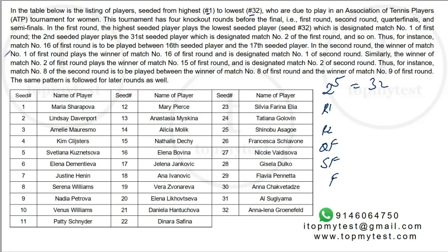The highest seeded player plays the lowest seeded player — seed number one is match number one of the first round. The second seeded player plays the 31st seeded player, designated as match number two. So match one is 1 vs 32, match two is 2 vs 31, match three is 3 vs 30, and so on until match 16 is 16 vs 17. You can easily calculate: 1+32=33, 2+31=33, 3+30=33, and so on. In the second round, the winner of match one plays the winner of match 16, the winner of match two plays the winner of match 15, and so on.